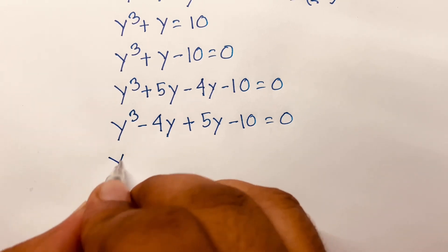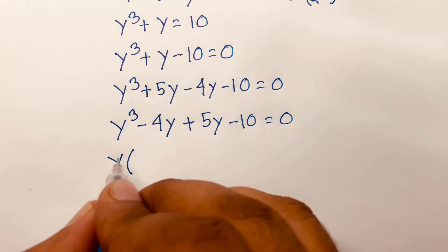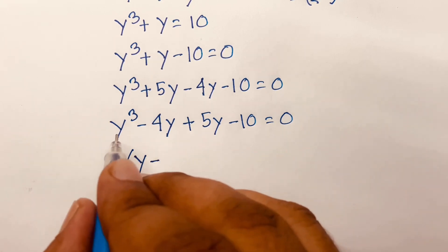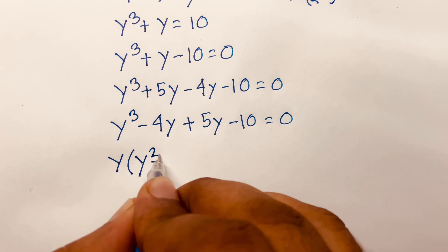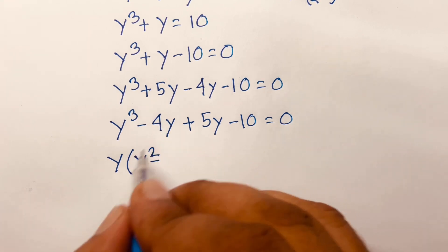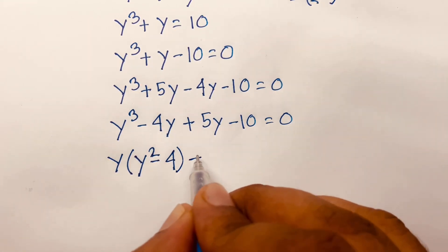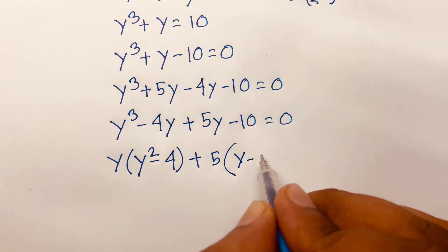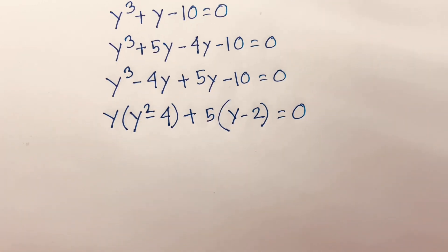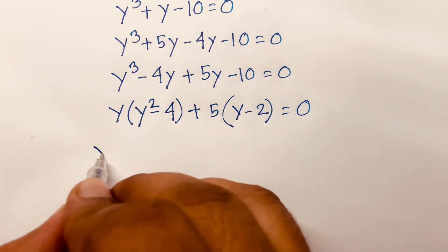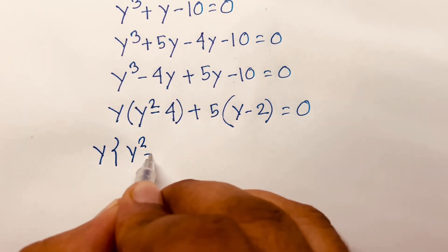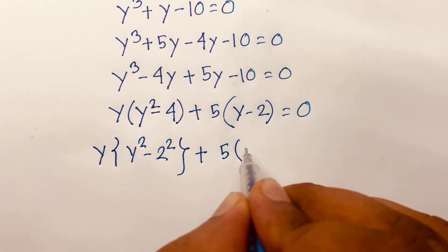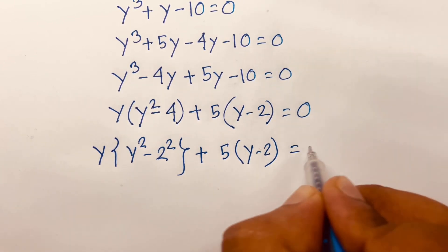I can say y is common. Factoring by grouping: y squared times y minus 4, plus 5 times y minus 2, equals 0. We find that y minus 2 is a common factor. So I can say y minus 2 times y squared plus 2 squared plus 5 times y minus 2 is equal to 0.